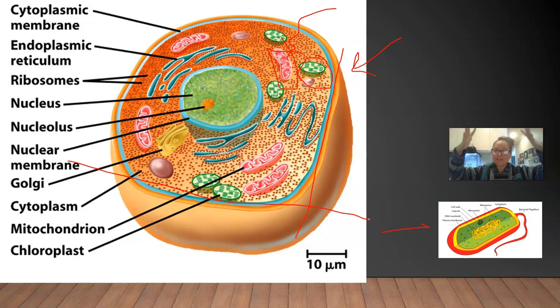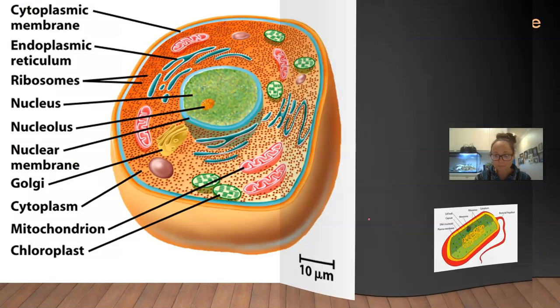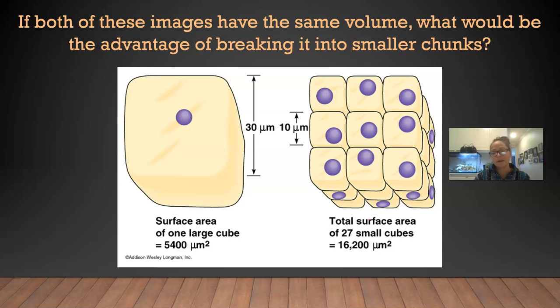And so if a cell were to get so large, like a beach ball, the mitochondria located within the center, it would be very difficult for the oxygen to get there by random diffusion. It would take a very long time. So when we think about the amount of volume in a cell compared to its surface area, we can see these two images here.